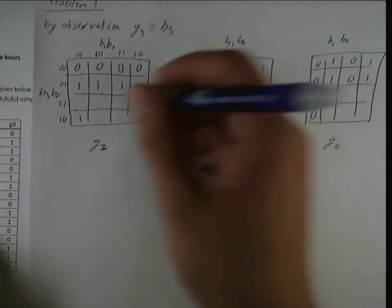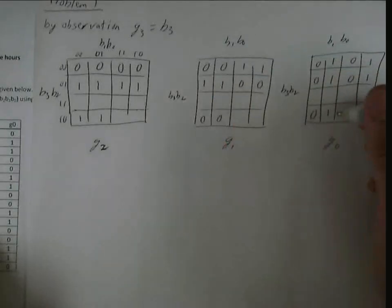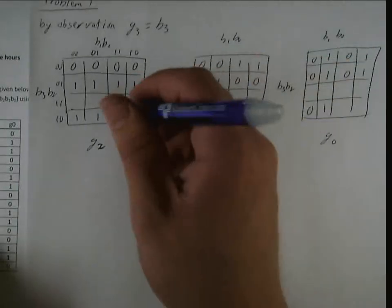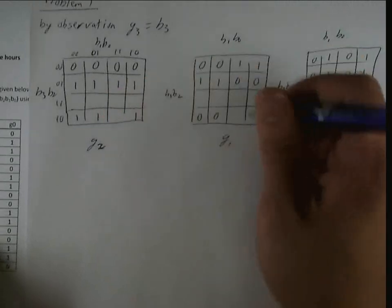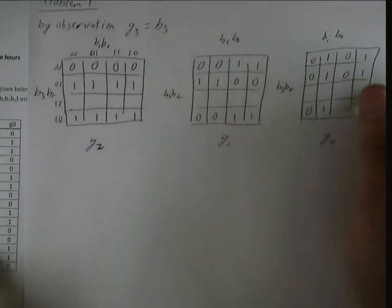And then the next one will be 1, 0, 1. The next one will be 1, 1, 1. And then 1, 1, 0.